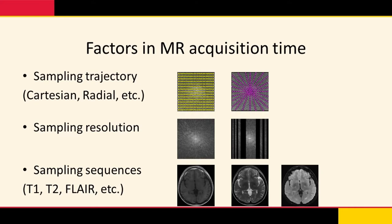There are many factors that influence MR acquisition time. The relevant ones for us include the sampling trajectory, the sampling resolution, and the number of sampling sequences. Sampling trajectory determines the pattern of which K-space data is acquired. Sampling resolution determines how many points on the K-space are measured. Sampling sequences are used to highlight specific regions or materials, for instance fluid or tumors, which are useful for diagnostic purposes.